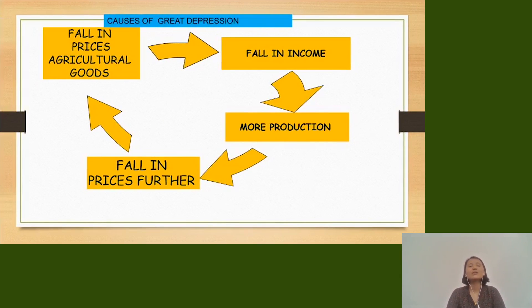So, summarizing the first cause of the Great Depression: agricultural overproduction led to a fall in the prices of agricultural goods, which severely hurt farm incomes.